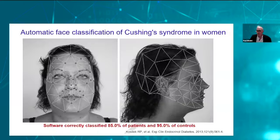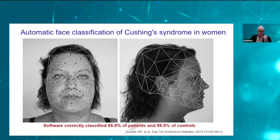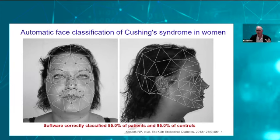A similar study was done with Cushing's syndrome, where the computer extracted different facial areas. The software correctly classified patients with Cushing's at approximately 85% accuracy, and correctly identified 95% of controls — those without Cushing's. Interestingly, when only obese patients were used rather than a broader weight range, the accuracy of the algorithm diminished, as it struggled to differentiate between Cushing's and nutritional obesity.